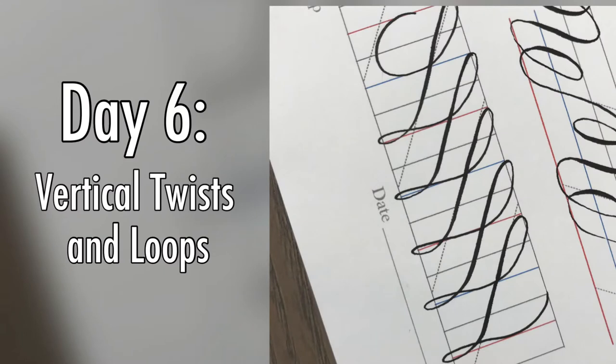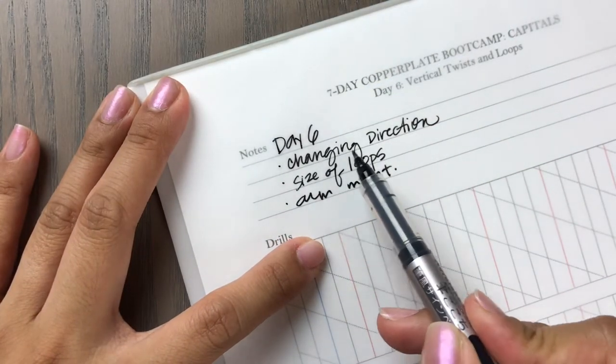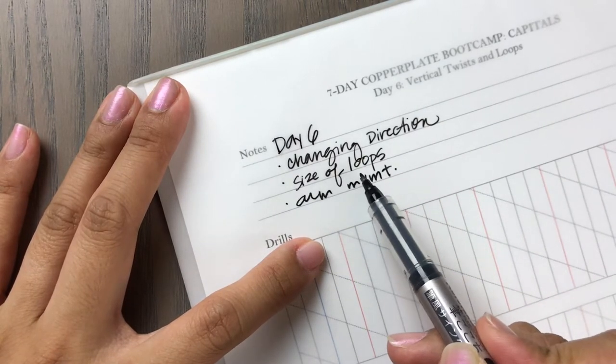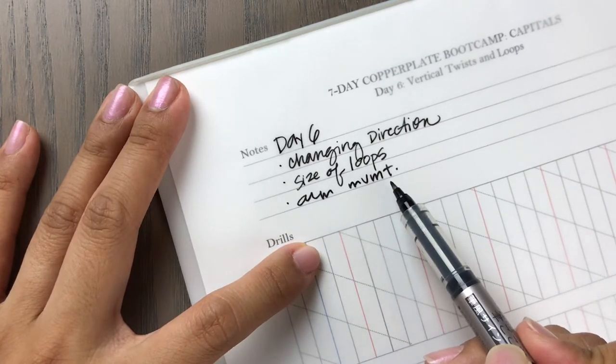Okay day six, we're going to be doing vertical twists and loops. This is a fun one and kind of tricky. So the goals: we want to focus on changing direction of our pen, we want to keep our loop sizes consistent, and then last but not least we want to think about our arm movement.